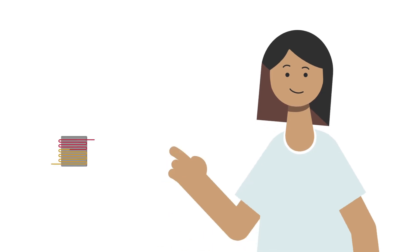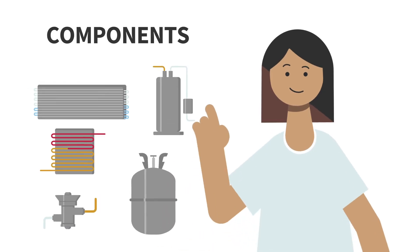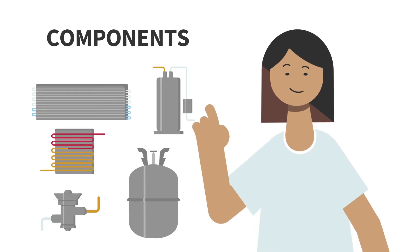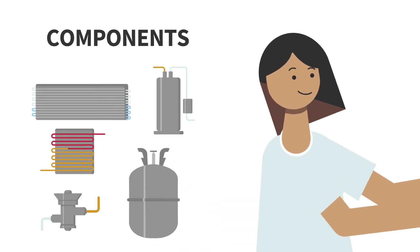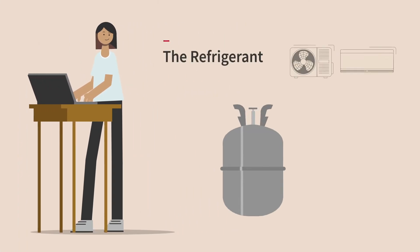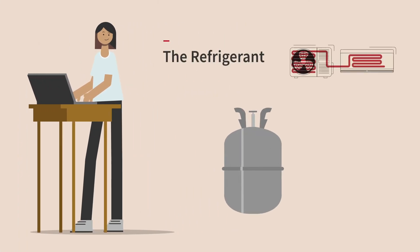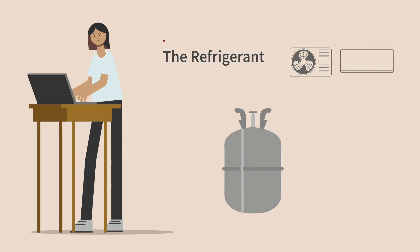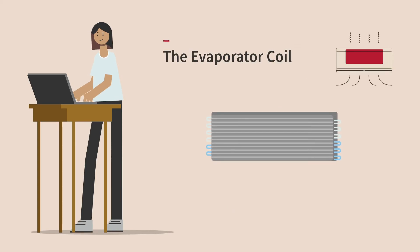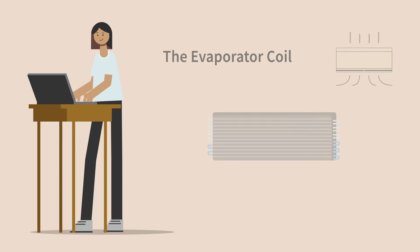So you have an idea of how an air conditioner works, but what about all the different components we mentioned? Let's take a closer look. The refrigerant transports heat from the indoor unit to the outdoor unit, where the heat is then expelled. The evaporator coil delivers cool air indoors and removes the heat from your home.